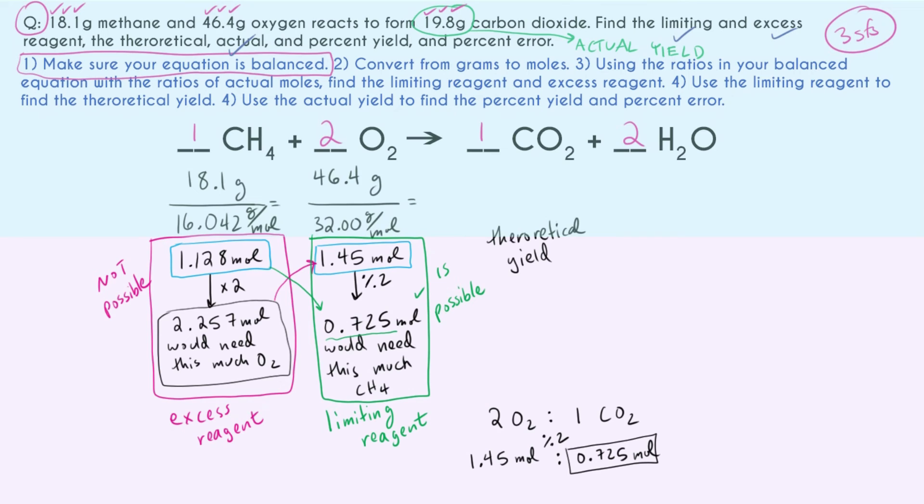So our theoretical yield is 0.725 moles of carbon dioxide. But your teacher usually doesn't want you to give it in moles—usually they want you to give it in grams. So let's go ahead and get the molar mass: 44.01 grams per mole. Go ahead and multiply, cancel out moles. Using again three sig figs, we end up with 31.9 grams carbon dioxide. So in a perfect, perfect, perfect world, we could possibly make 31.9 grams of carbon dioxide. And now we have our theoretical yield.